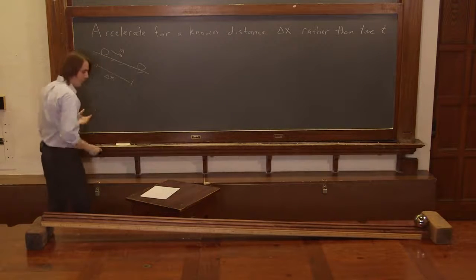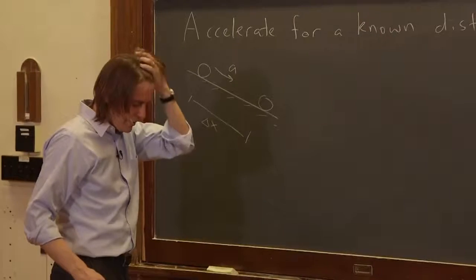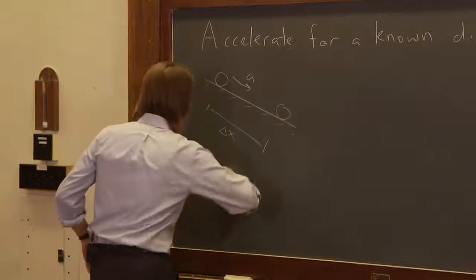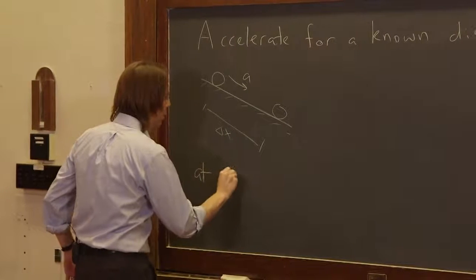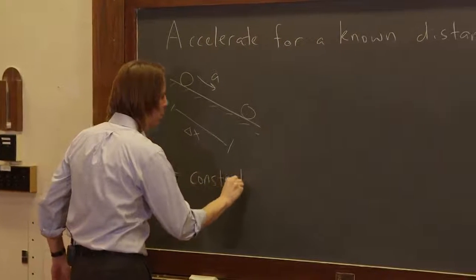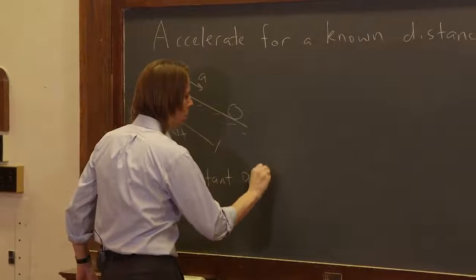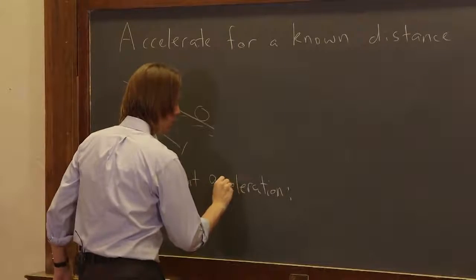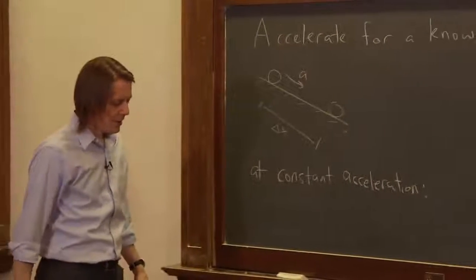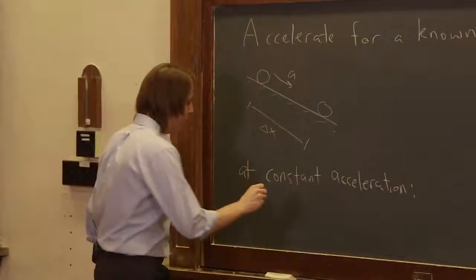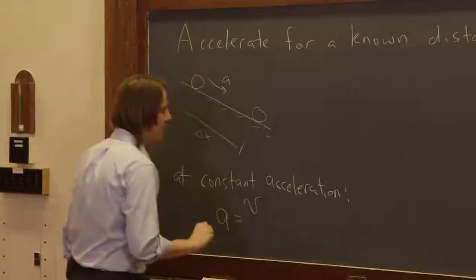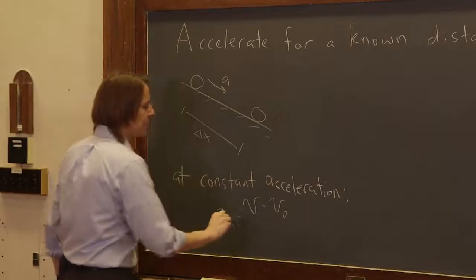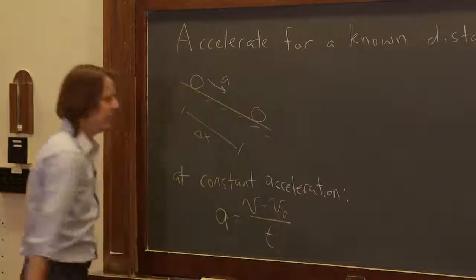So let's see how we would figure it out. At constant acceleration, which we are assuming, we know that a is going to be the velocity it gets to, when it's here, minus the velocity it had initially, over this time that we don't know.